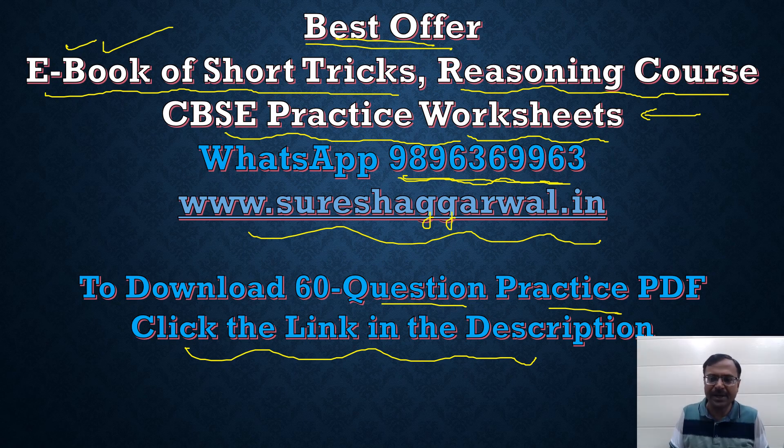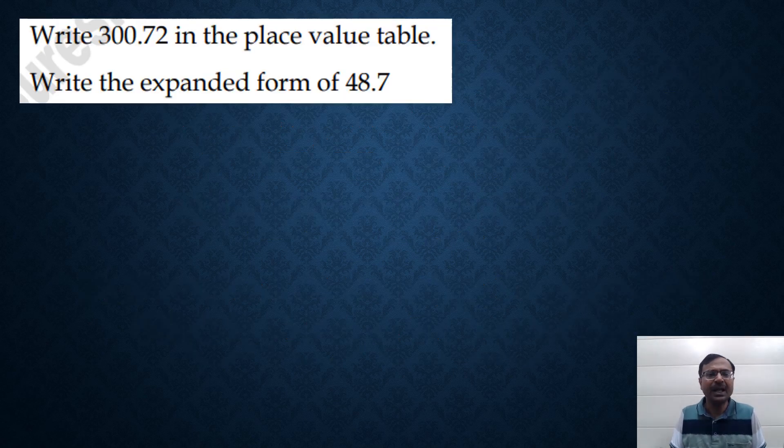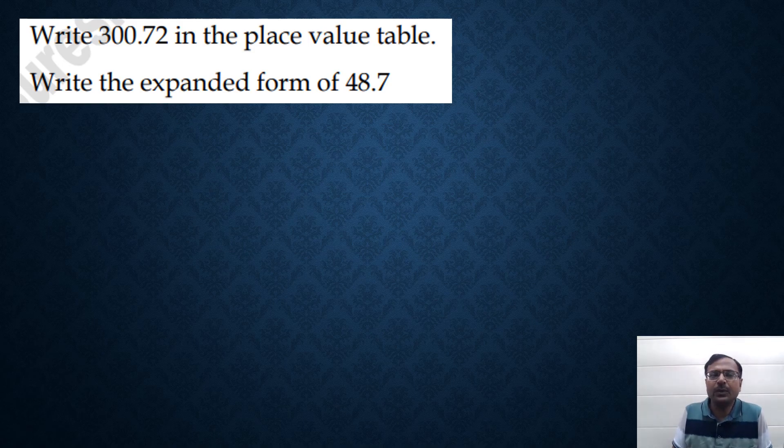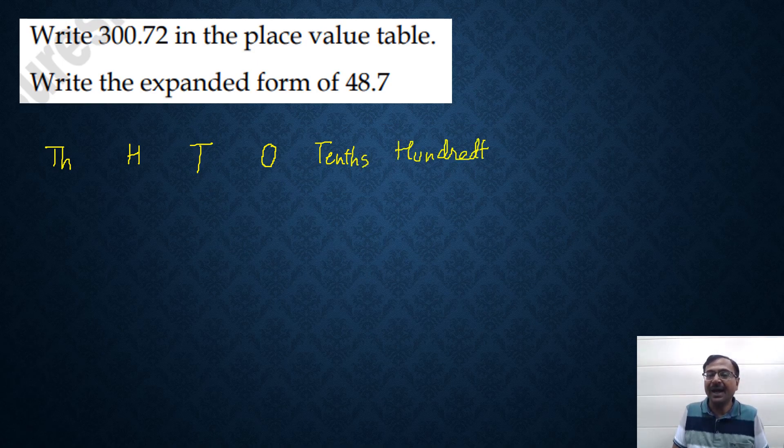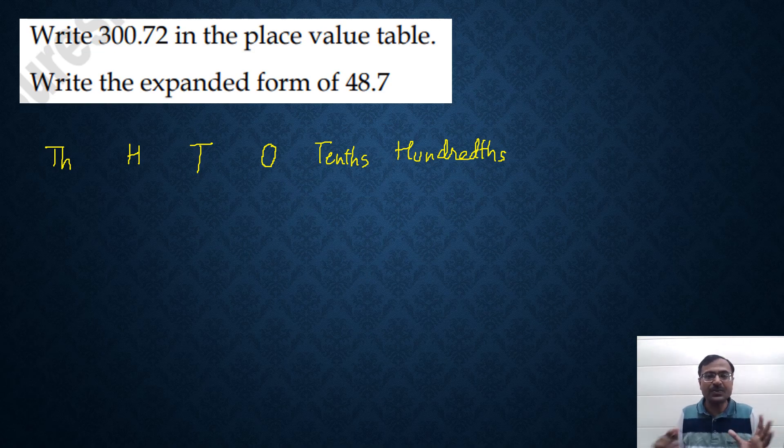Let's see some of the examples which will be very useful in solving the practice PDF questions. Place value table. You know the place value table. We start from the ones here and then we move on like this. Ones, tens, hundreds, thousands and so on. And on the right hand side, that is the number after decimal, we have the tenths and then the hundredths, hundredths and thousandths and so on. This is called place value table.